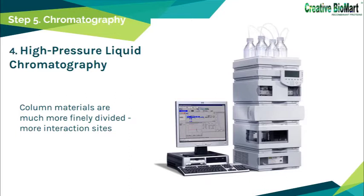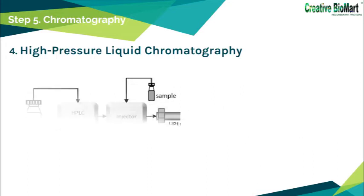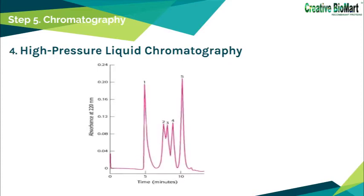High-pressure liquid chromatography (HPLC) can substantially improve the resolving power of all column techniques. The column materials are more finely divided, providing more interaction sites and greater resolving power. Samples are loaded and move through the stationary phase under pressure. Different materials have different affinities with the stationary phase, so objects leave the column at different times. The detector obtains various peak signals, each peak representing a different compound. After comparative analysis of these signals, we can determine the materials contained in the sample, achieving high resolution as well as rapid separation.